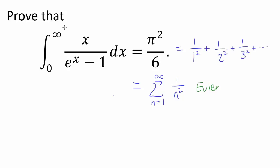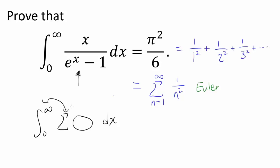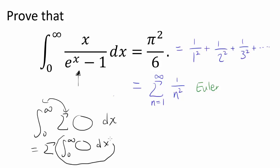Since we want to prove this integral equals this summation, it may be smart to somehow incorporate some kind of series or summation into the expression inside the integral. If we can have some summation inside the integral, maybe we can trade the summation and integral — given that conditions are right — and show that this integral is actually the sum of 1 over n squared. That's what we're shooting for.